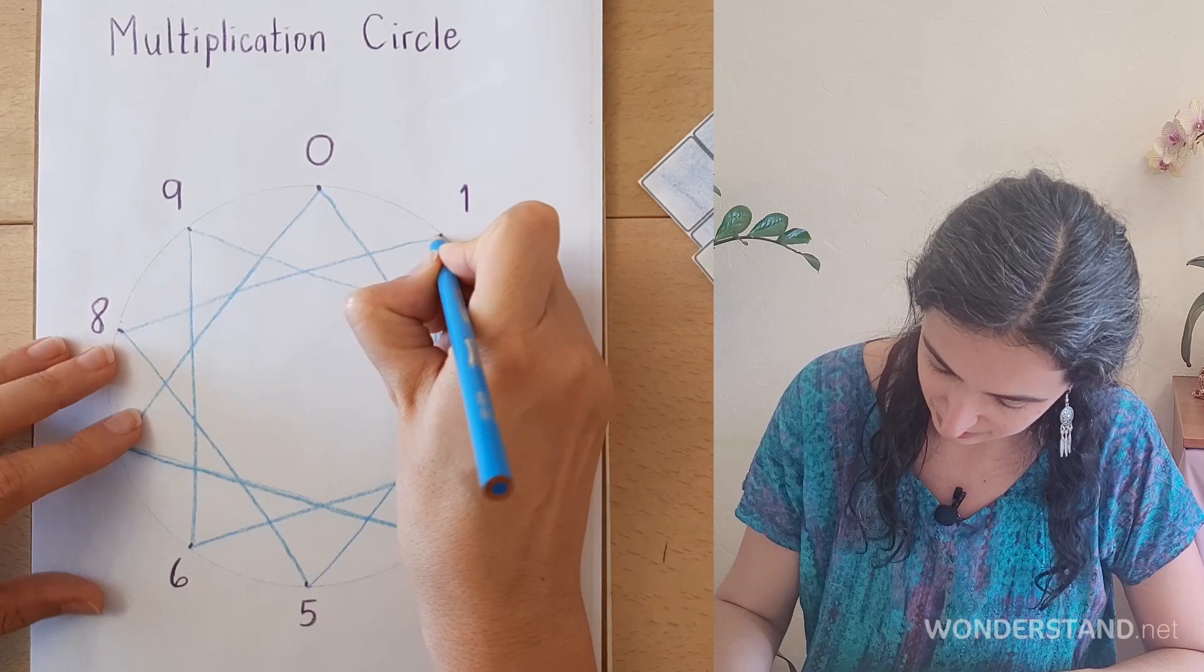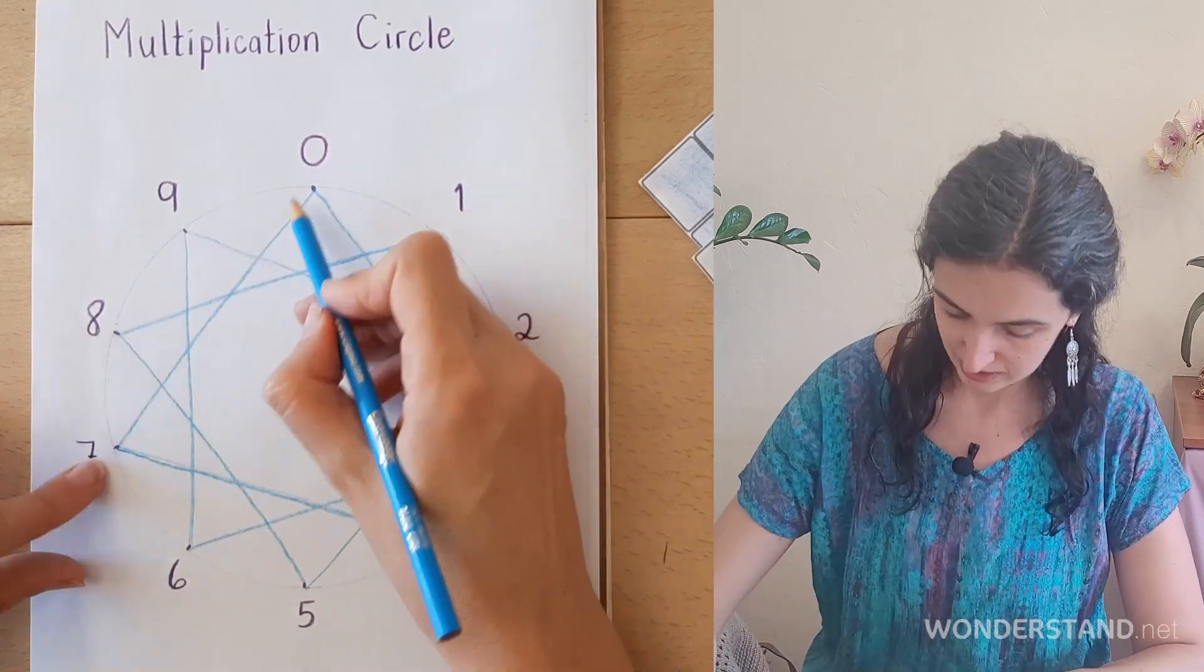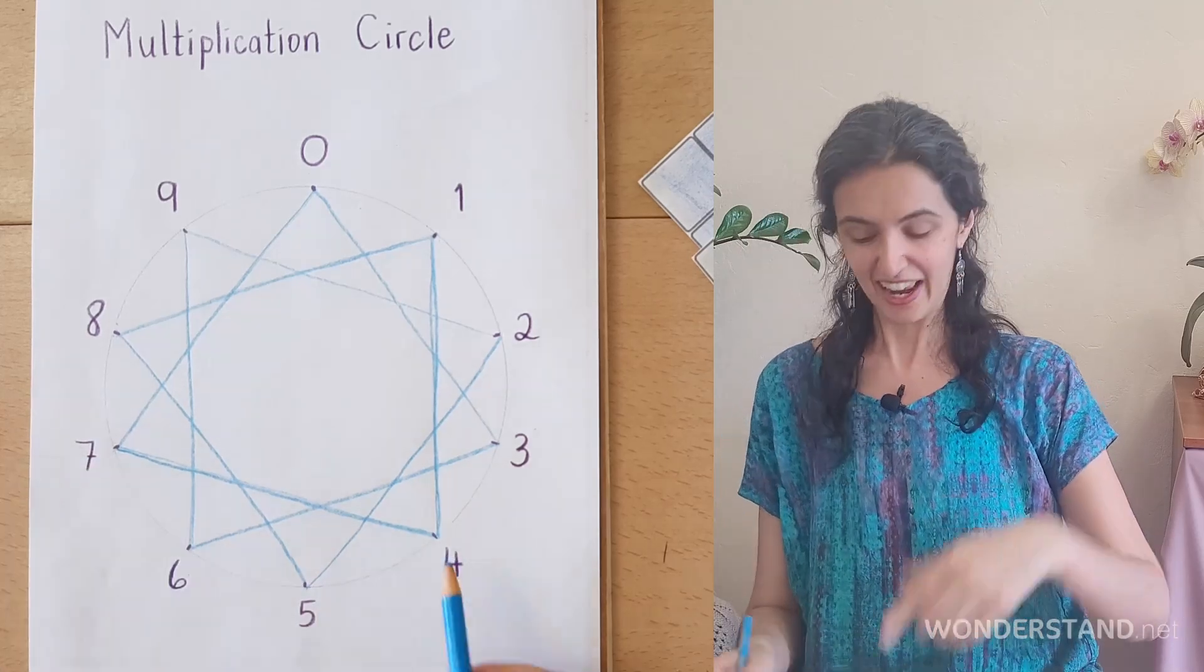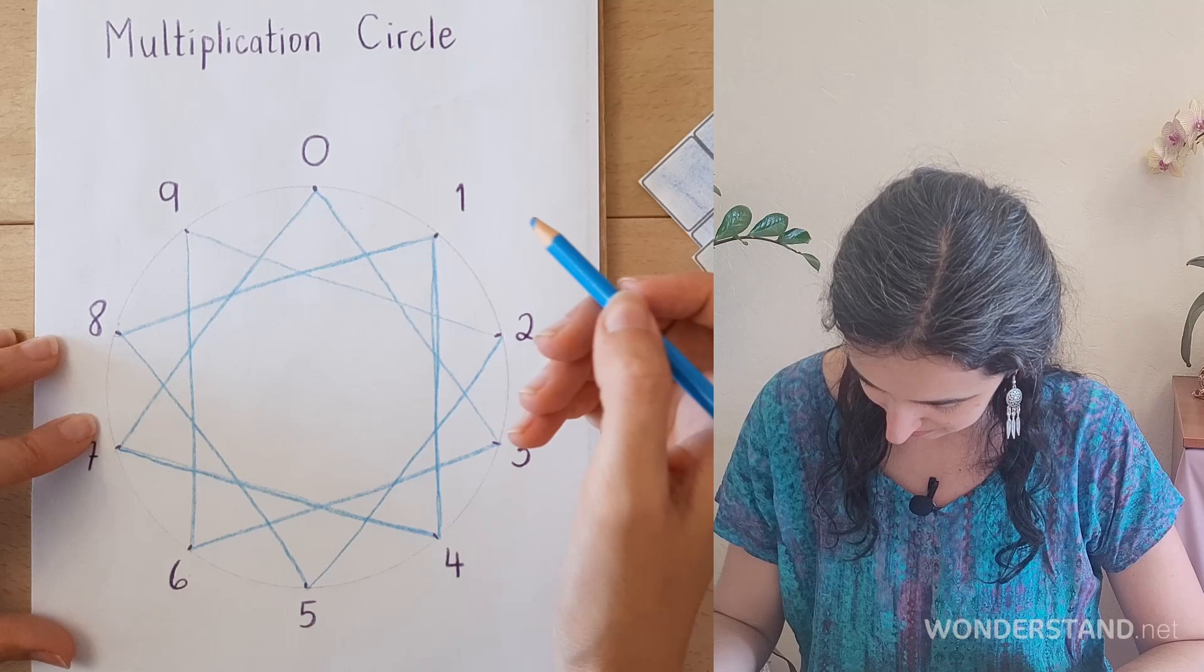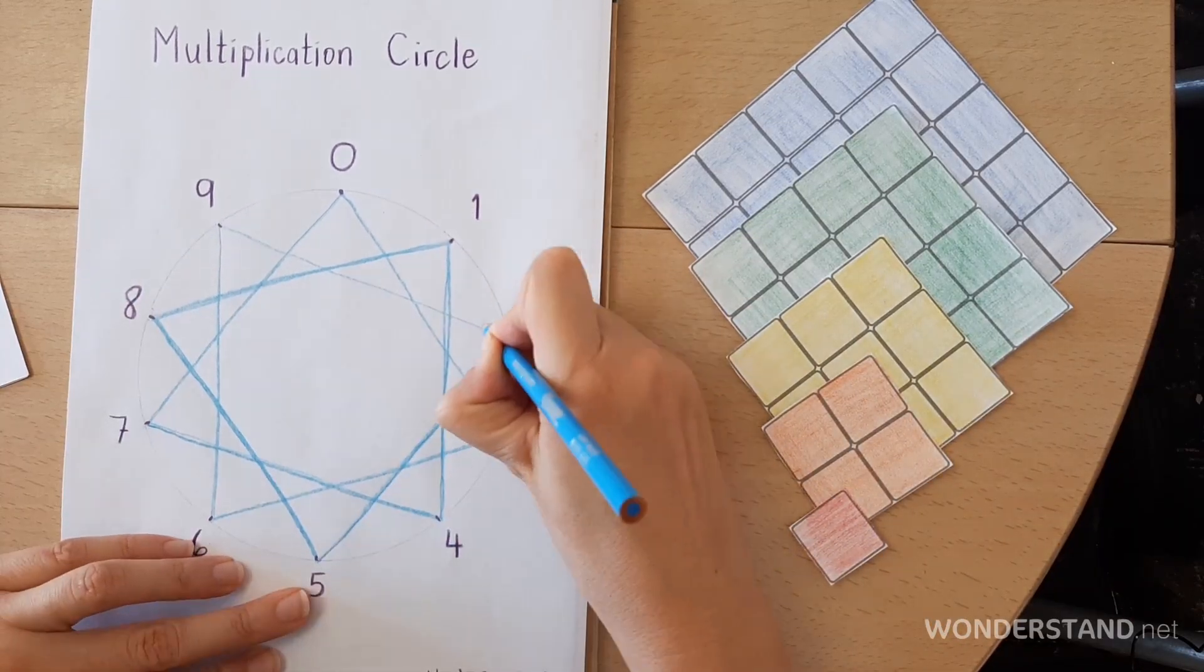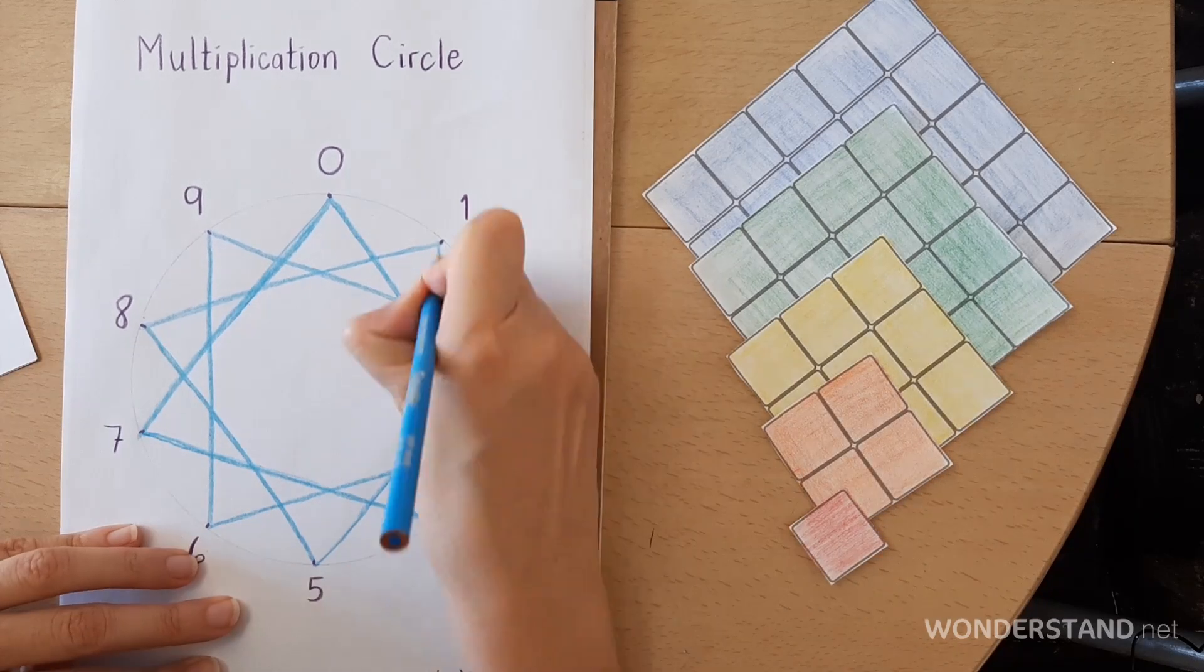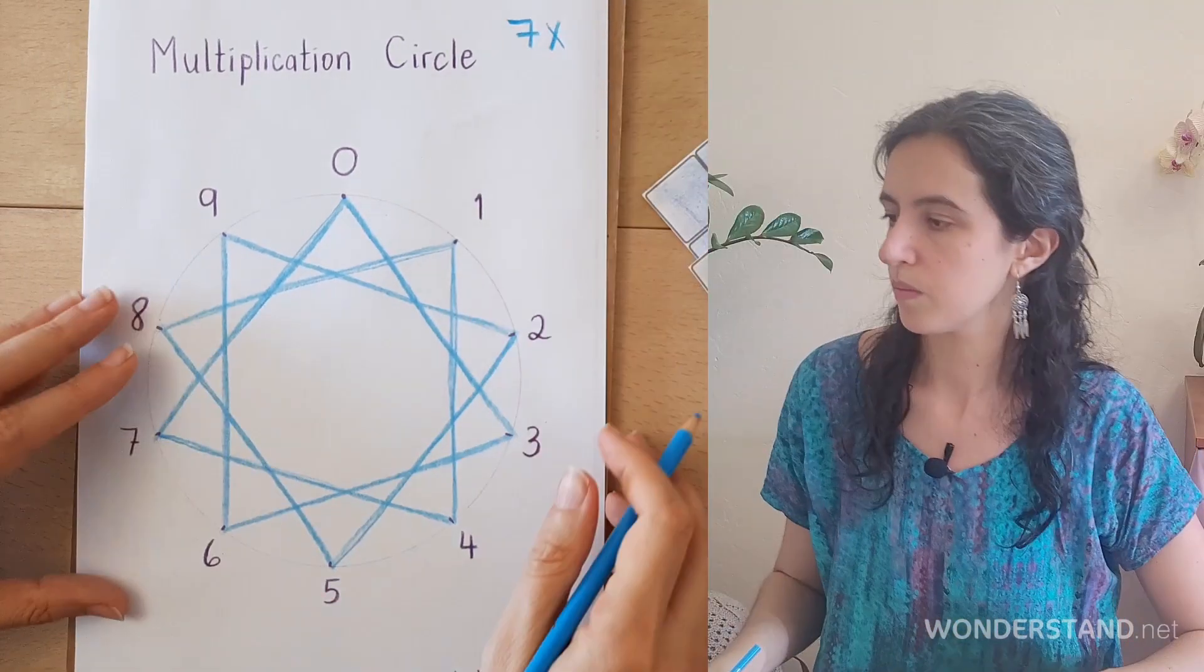Now, I said 70 was the last number, but that's not quite true because I could keep going. I could keep going. 77, 84. And I can keep going until infinity. Beautiful.